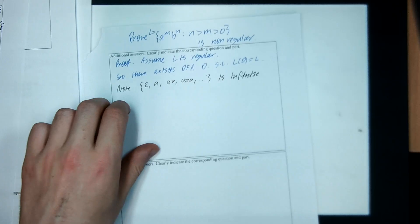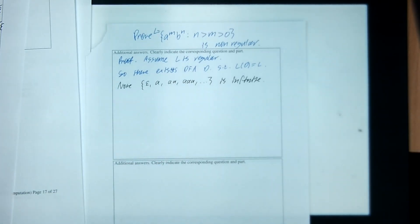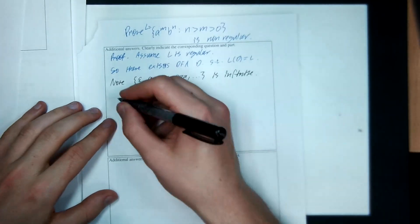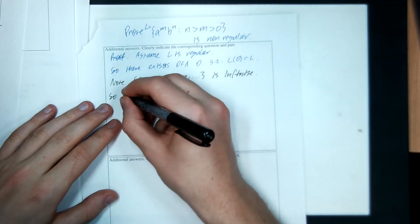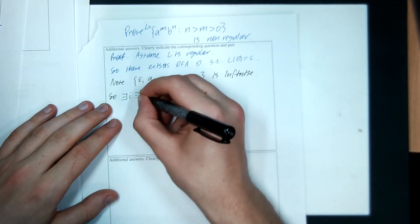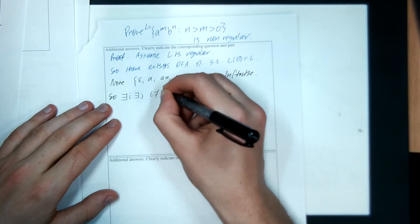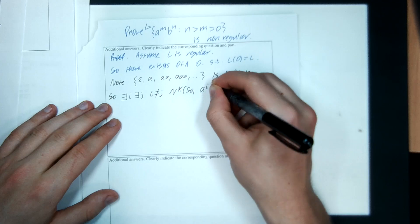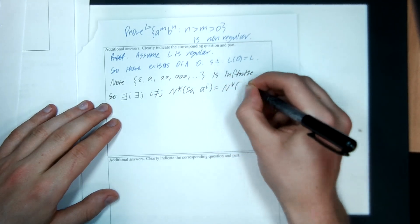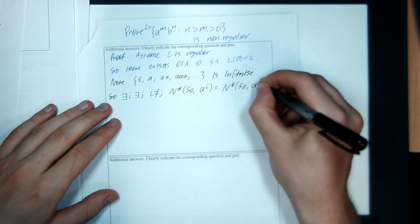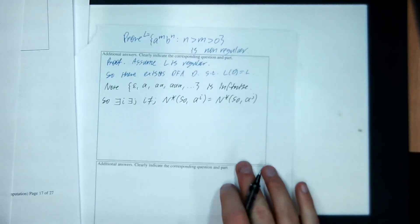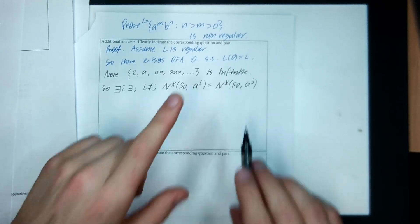So we can note by the Pigeonhole principle, if I'm in the starting state, and I read two strings from this set, I go to the same place. So, there exists an I, exists a J, I is not J, such that from the starting state, reading I many A's goes to the same place as reading J many A's. Okay, now what I've got to do is choose a string from the language, and then do this hot swap, and make it screw up.